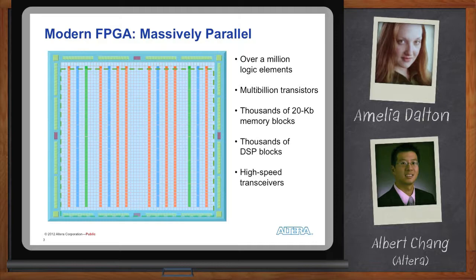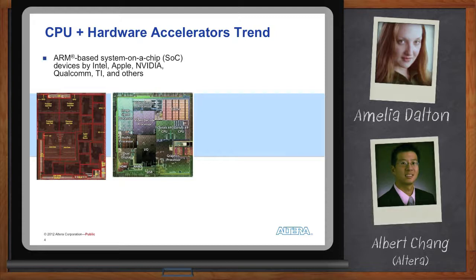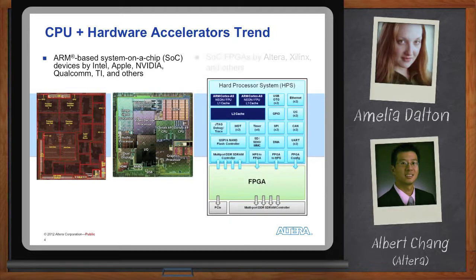Commonly, the FPGA sits next to a processor, and the performance-intensive functions that can't be met on a processor are offloaded to a hardware accelerator like an FPGA. You see that adoption continue to grow. For example, Intel, Apple, NVIDIA, Qualcomm, and TI are all looking to embed ARM processors — dual-core ARM processors — into their devices. Similarly, in the FPGA industry, Altera and Xilinx also provide embedded ARM processors into their FPGAs, what we call SoC FPGAs.